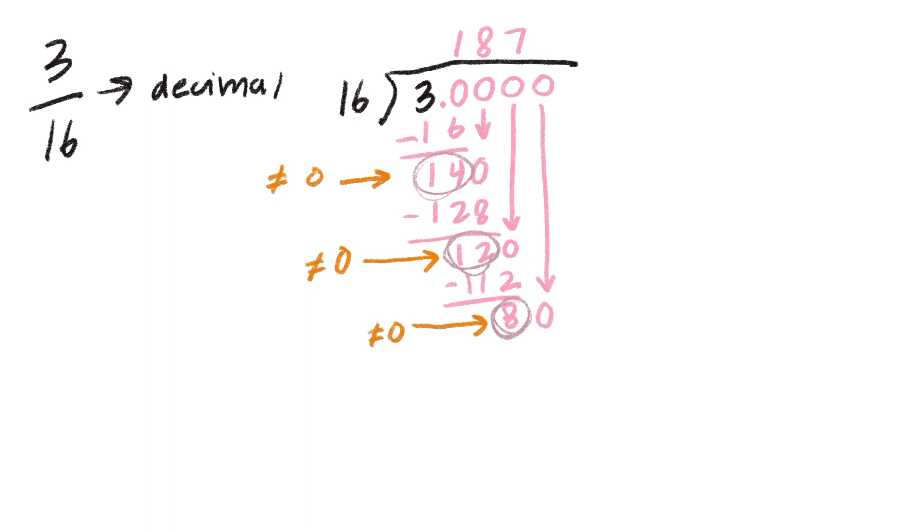After bringing down another zero, we check how many times 16 goes into 80, which is exactly 5 times. Now we have zero left over and our current quotient is 1875. Remember though, this isn't our final answer. Since we used four decimal place values in the dividend, we have to move the decimal in the quotient and move it four times to the left to get our final answer of 0.1875.